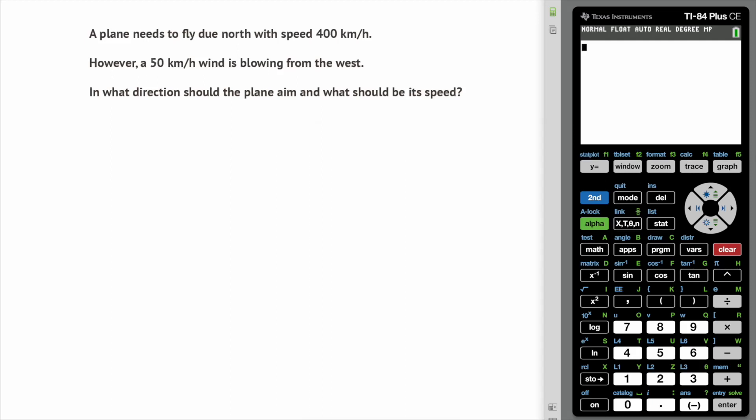A plane needs to fly due north with a speed of 400 kilometers per hour, however a 50 kilometer per hour wind is blowing from the west. In what direction should the plane aim and what should be its speed?